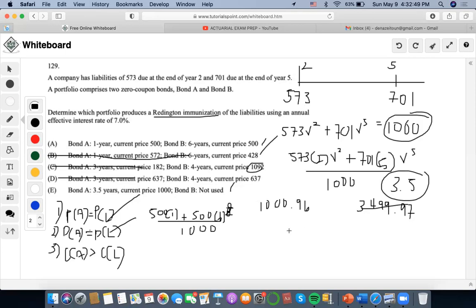So again, convexity: we take the cash flow and then we square the time value. So 573, discount back, V squared, which is 4, plus 701, discount, square the time value here, V to the 5, and then over our present value. So let's solve for this: 573 times 4 times 1.07 to the negative 2, which is 2001.92.